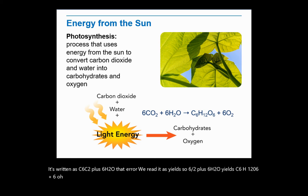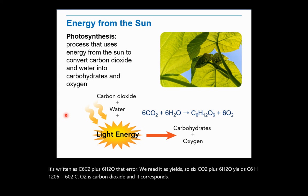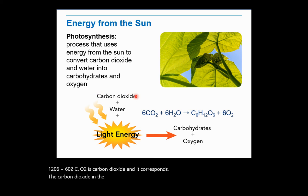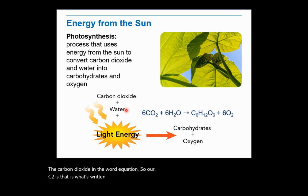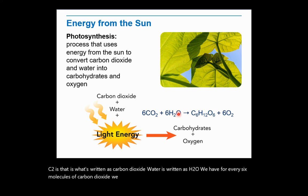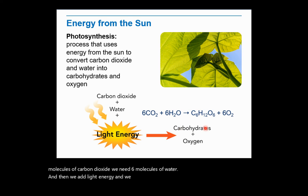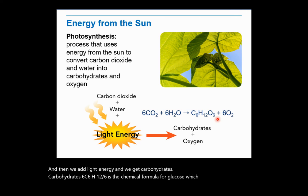CO₂ is carbon dioxide, corresponding to the carbon dioxide in the word equation. Water is written as H₂O. For every 6 molecules of carbon dioxide, we need 6 molecules of water, and then we add light energy and we get carbohydrates. C₆H₁₂O₆ is the chemical formula for glucose, which is one kind of sugar, and 6O₂ is oxygen.